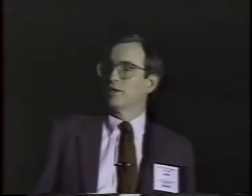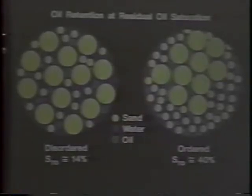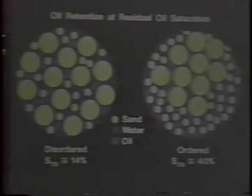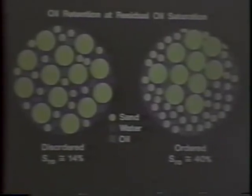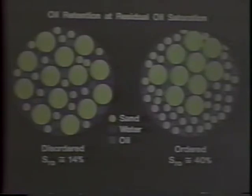This can be easily explained by running a simple experiment in which you take glass beads of two different sizes and put them in a column. If you pack them randomly and then do this experiment of water saturation, displace with the nonaqueous phase, and then displace that with water — water, oil, water — and see how much nonaqueous phase is left behind, you get about 14% in a bead pack.